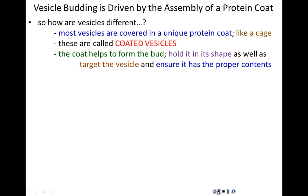These proteins that form the coat or cage start by helping the bud form at the edge of the organelle. They hold that vesicle in its spherical shape, and those proteins are also specific to the vesicle, aiding in targeting it to its appropriate location. Lastly, that protein coat contributes to ensuring that the vesicle is carrying the proper cargo — solving the challenges of shape, routing, and correct cargo selection.